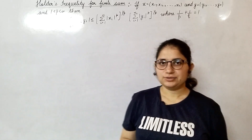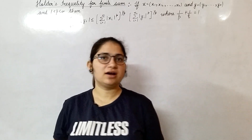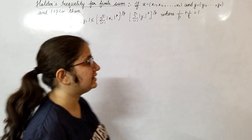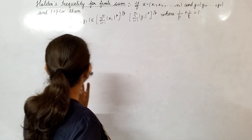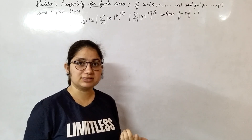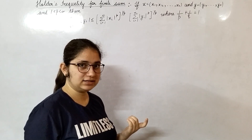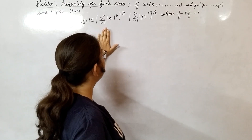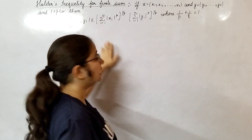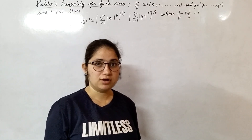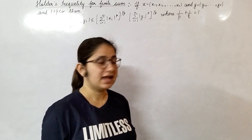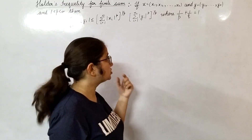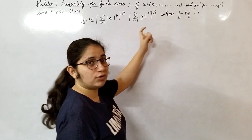Welcome back students. Today in this video we are going to understand Hölder's inequality for finite sum. Firstly we will do this inequality for n-tuples — we are taking finite sum, that's why we will do it for n-tuples — and we will also prove this inequality for infinite sum. What if n goes to infinity? In that case also this inequality holds. We will show that.